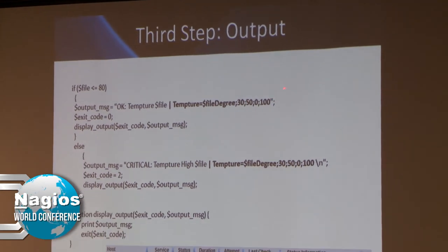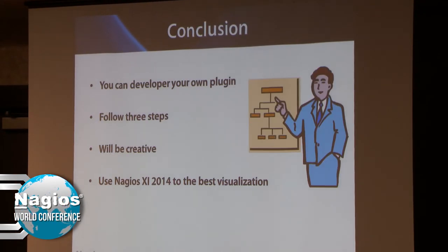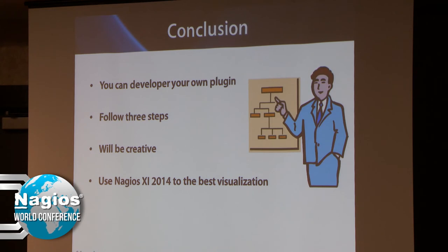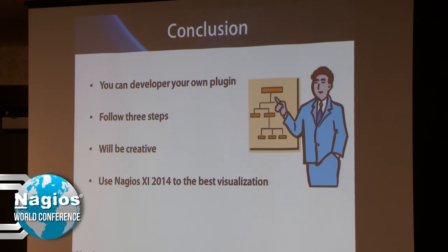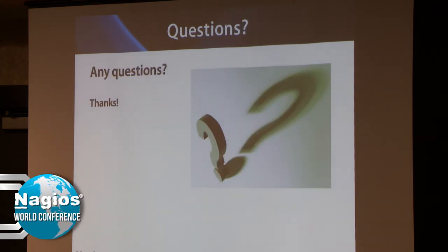Conclusion: you can develop your own plugin. You can see my presentation and copy the simple code — you can change it. If you want to monitor a percentage, the script works well for that use. Use Nagios XI 2014 for the best visualization, because graphics are generated automatically when you include the output performance parameters.